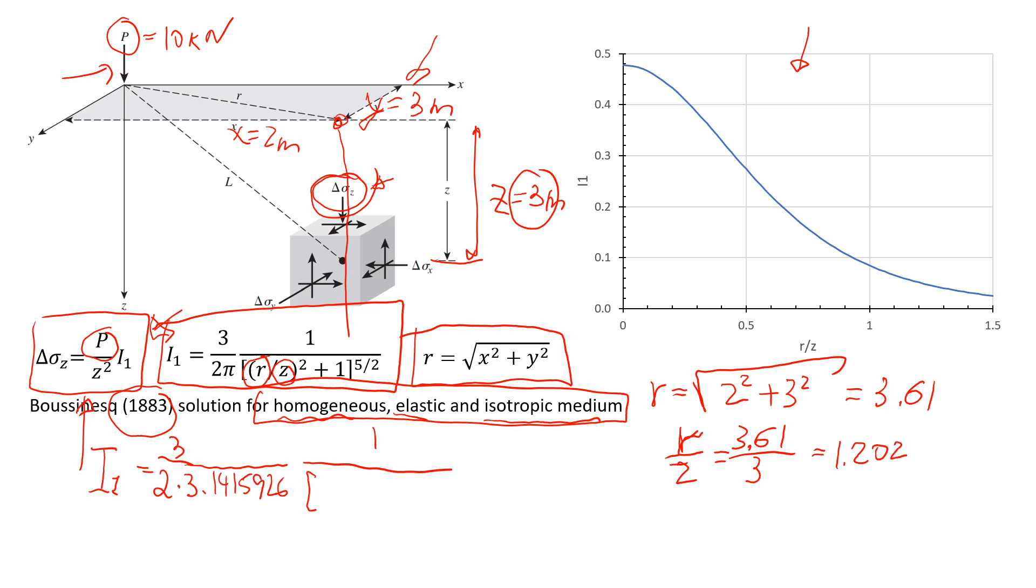So now we're going to put here is 1.202 in the power of 2 plus 1. And this has this kind of funny power of 5 over 2. So according to my calculations, this value of i should be equal to 0.0511.